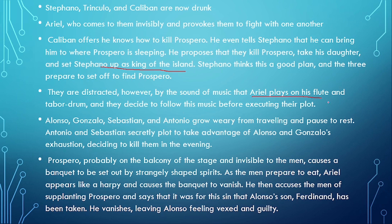Stefano thinks this is a good plan and the three prepare to set off to find Prospero. They are distracted, however, by the sound of music that Ariel plays on his flute and tabor drum. They decide to follow this music before executing their plot. Meanwhile, Alonzo, Gonzalo, Sebastian and Antonio grow weary from travelling and pause to rest.